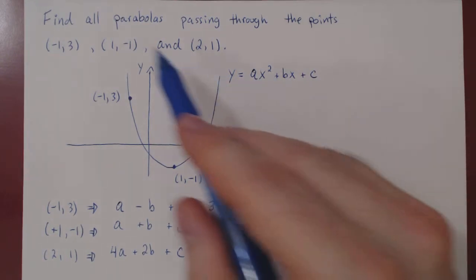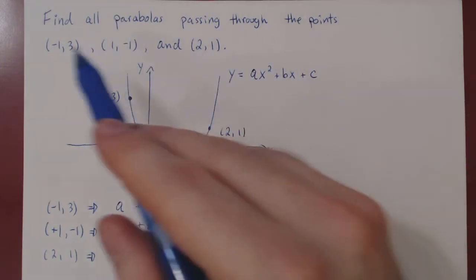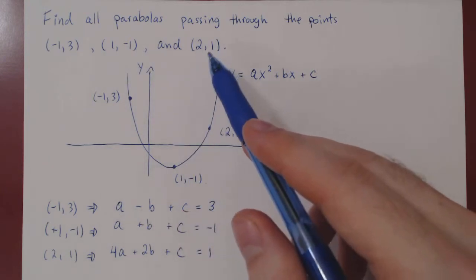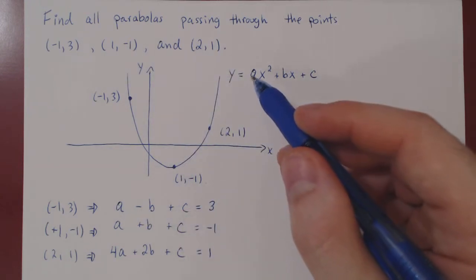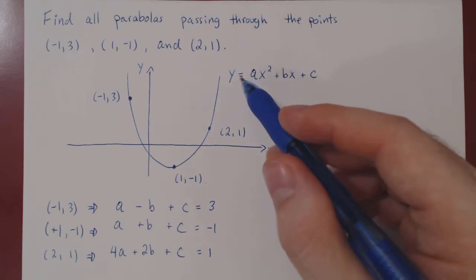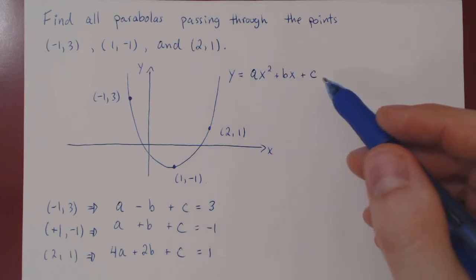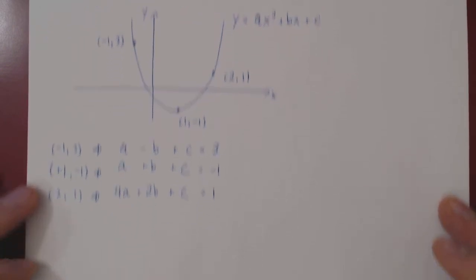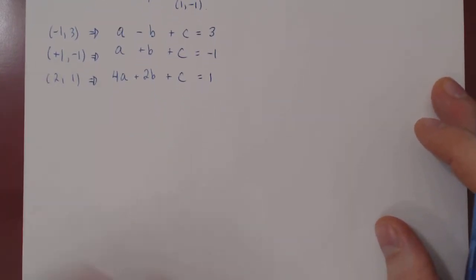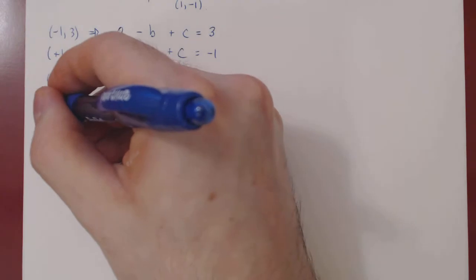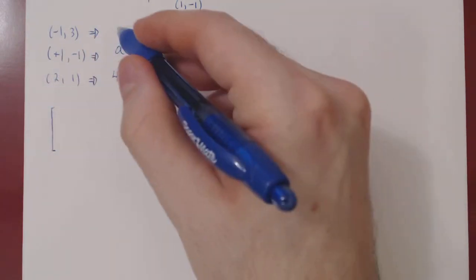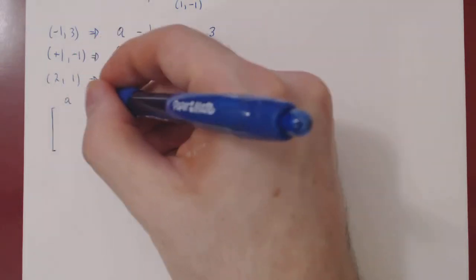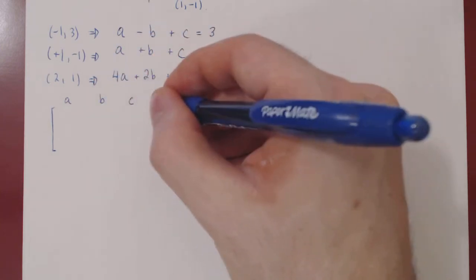And so you see, asking for all parabolas passing through these three points is the same as asking to find the variables a, b, c, the coefficients, which is the same as asking to solve this linear system. Now we're good to go. We, of course, construct the augmented matrix and row reduce. We'll keep the order the same as we already have a leading one here for a. So we have a, b, c are our variables.